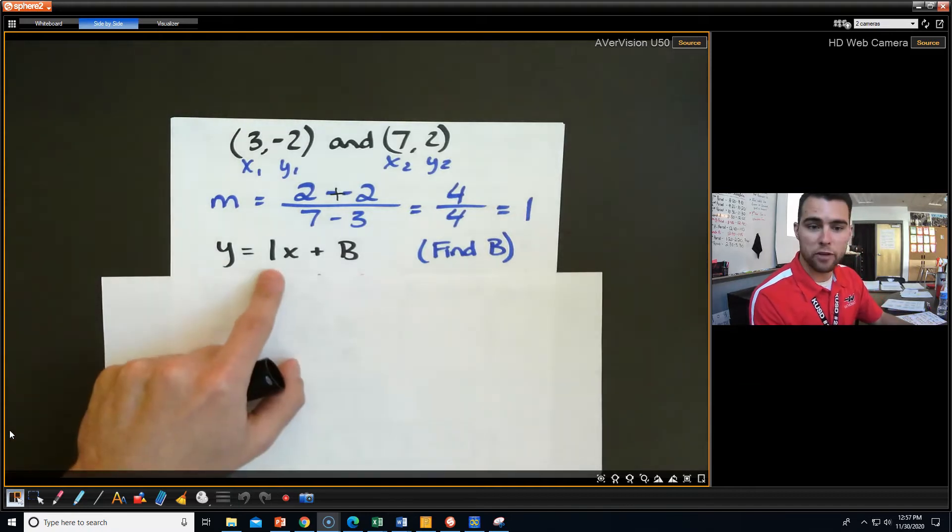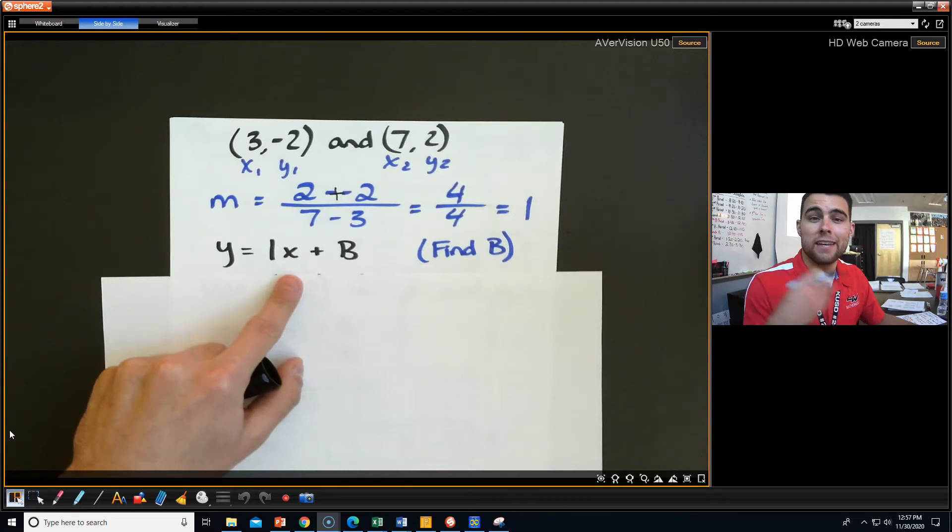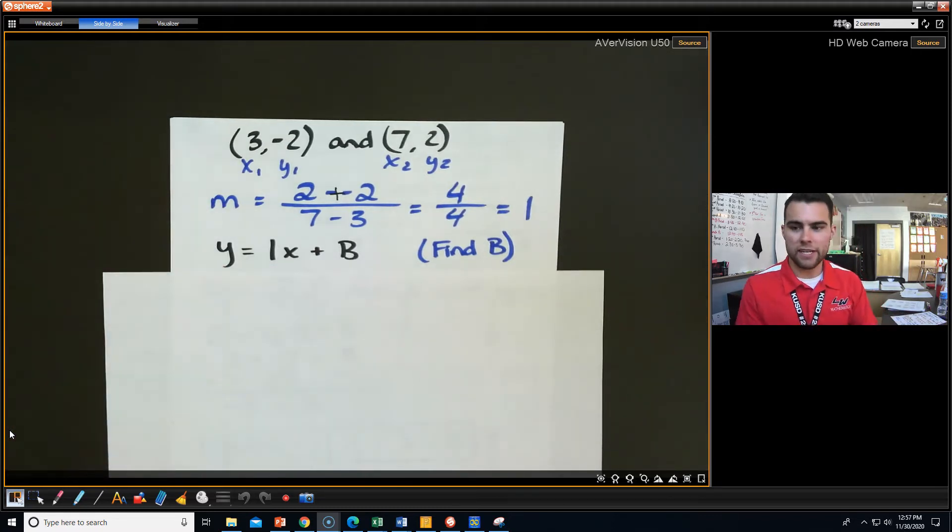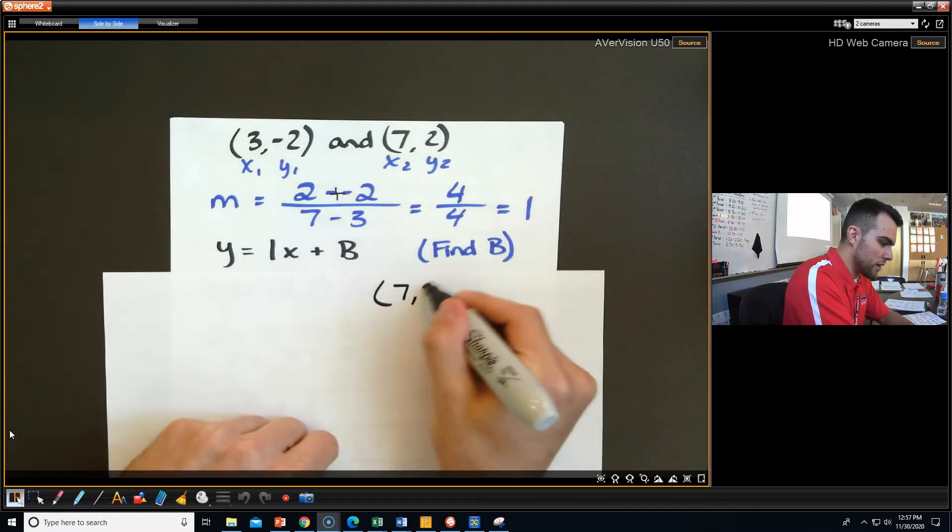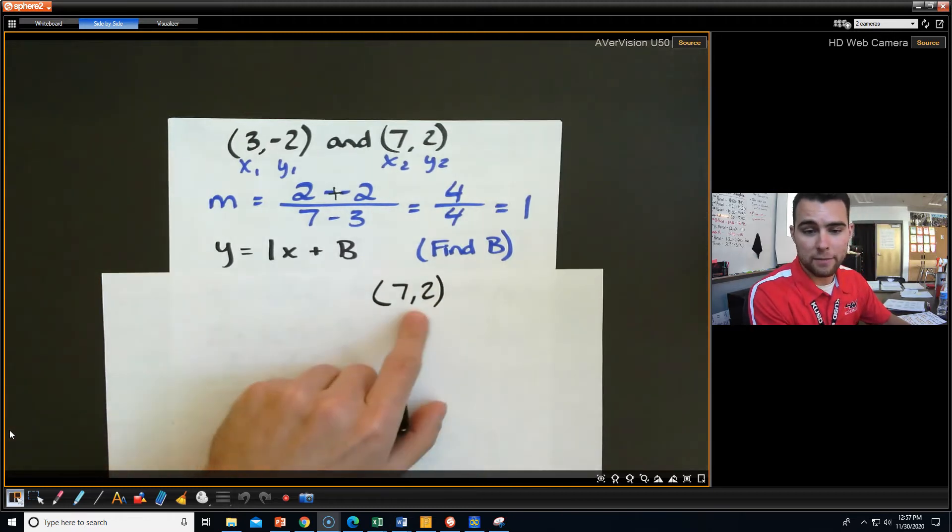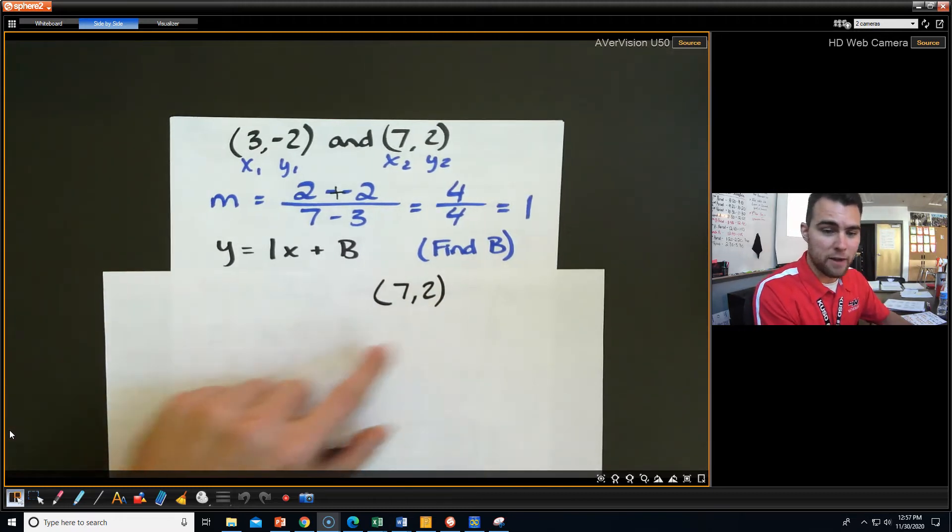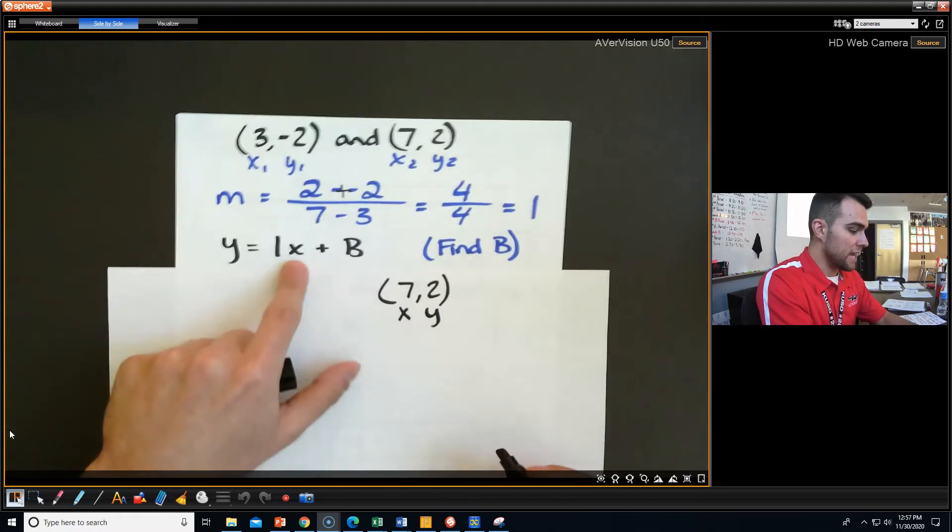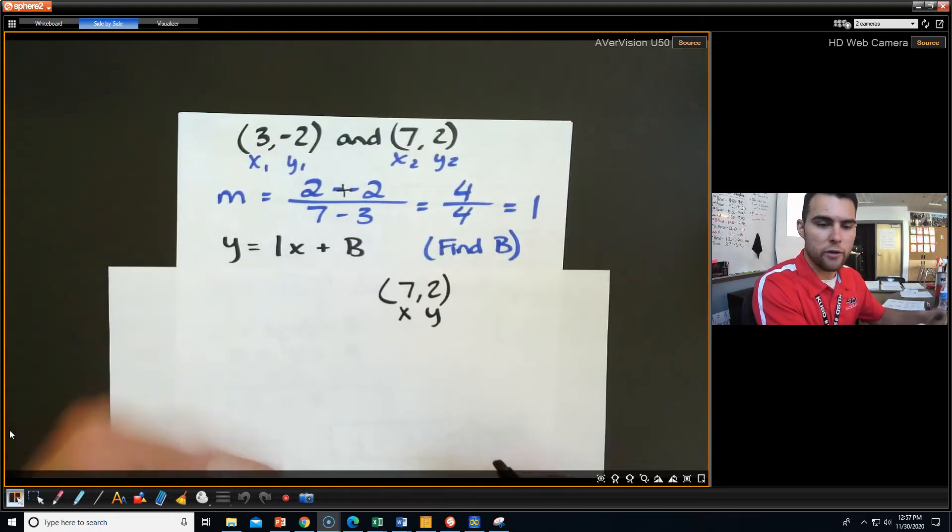So we can replace that m with 1, and now we have y equals 1x plus b. Now we need to find the b. Well, it kind of works similar to how we did with me giving you the slope, and now you had a point. So what you did with that point was, for example, this one we have one of our points to be (7, 2). I can plug my x and my y. I could plug my 7 and my 2 in for x and y, respectively, and go ahead and solve for b.